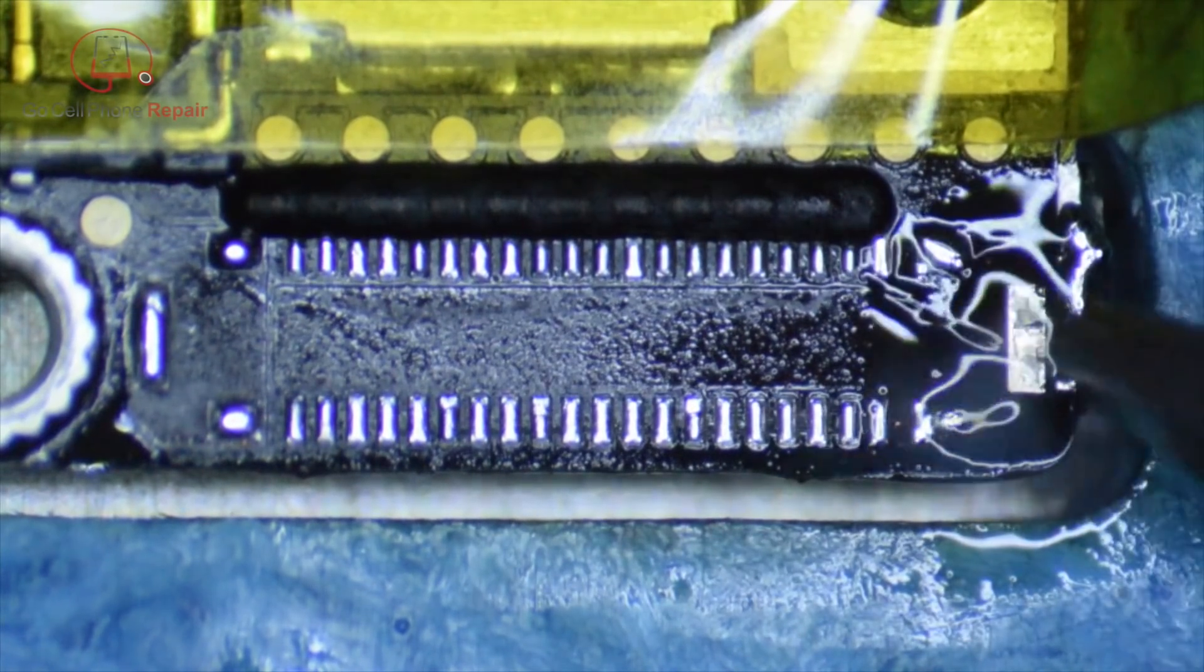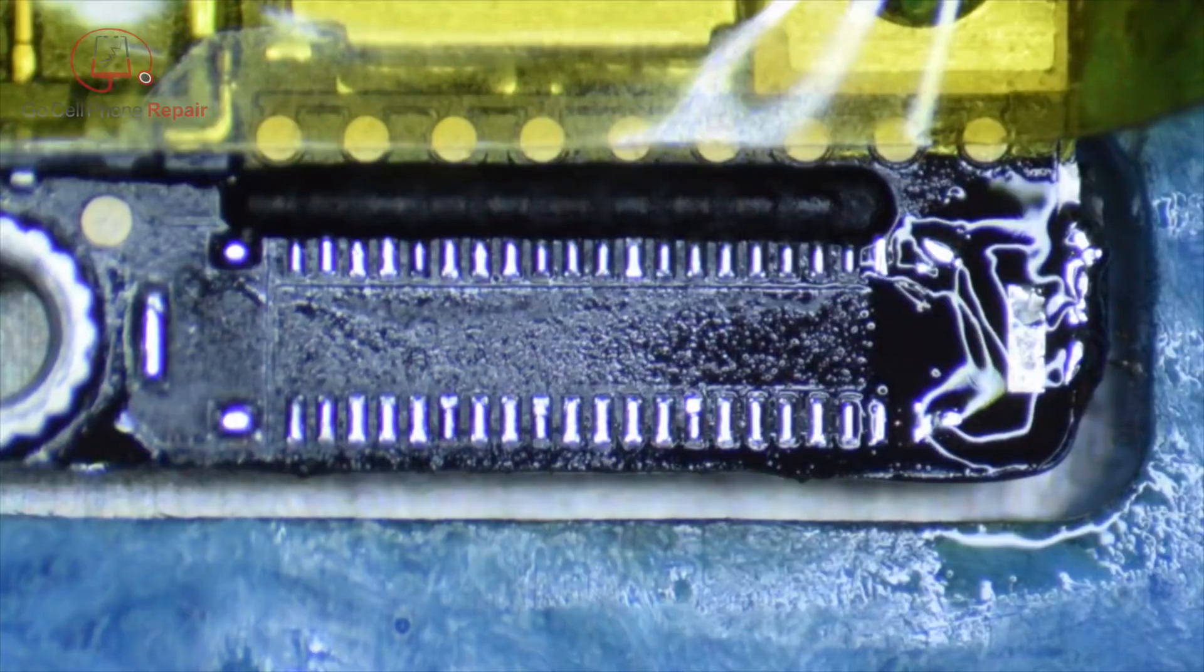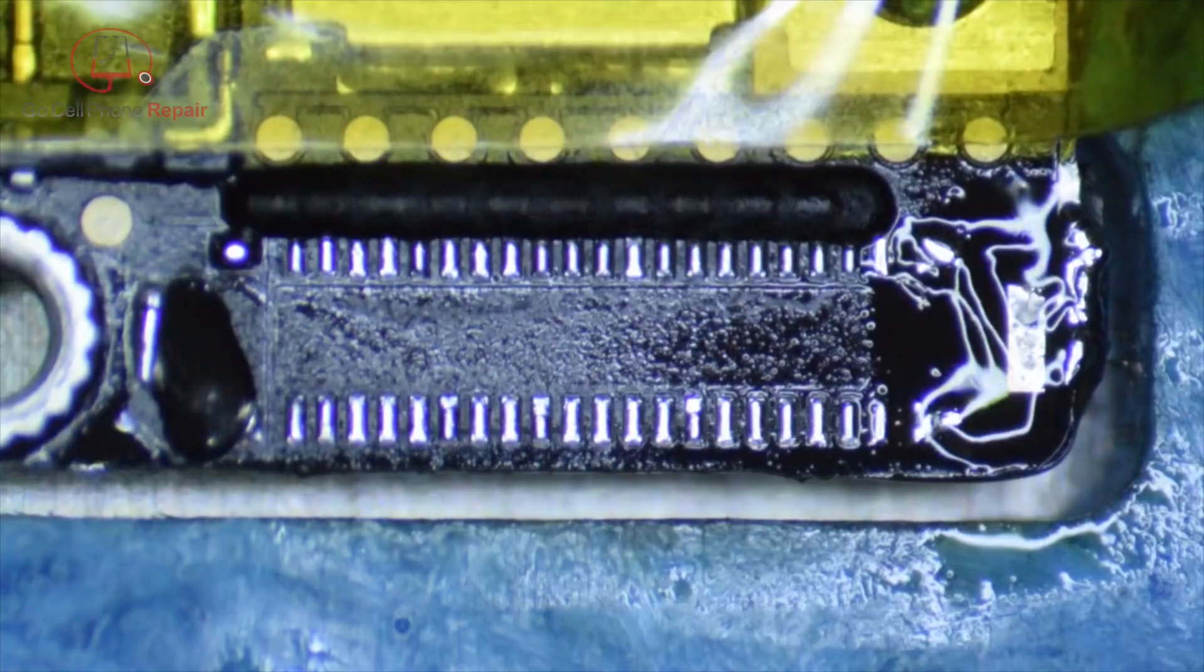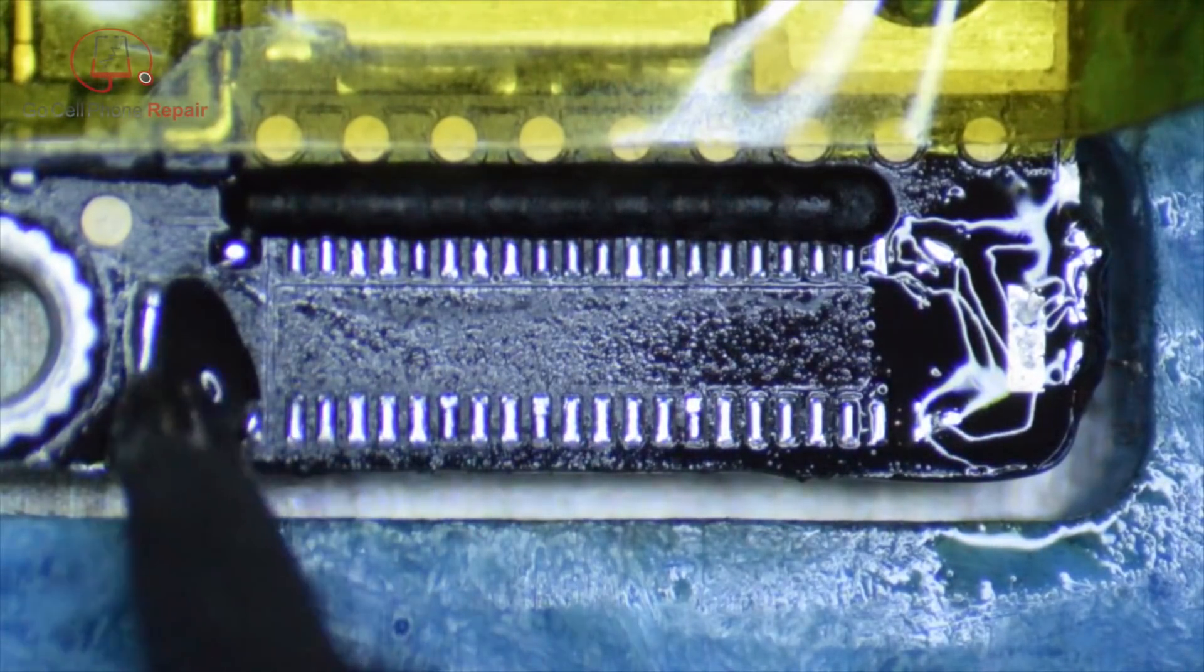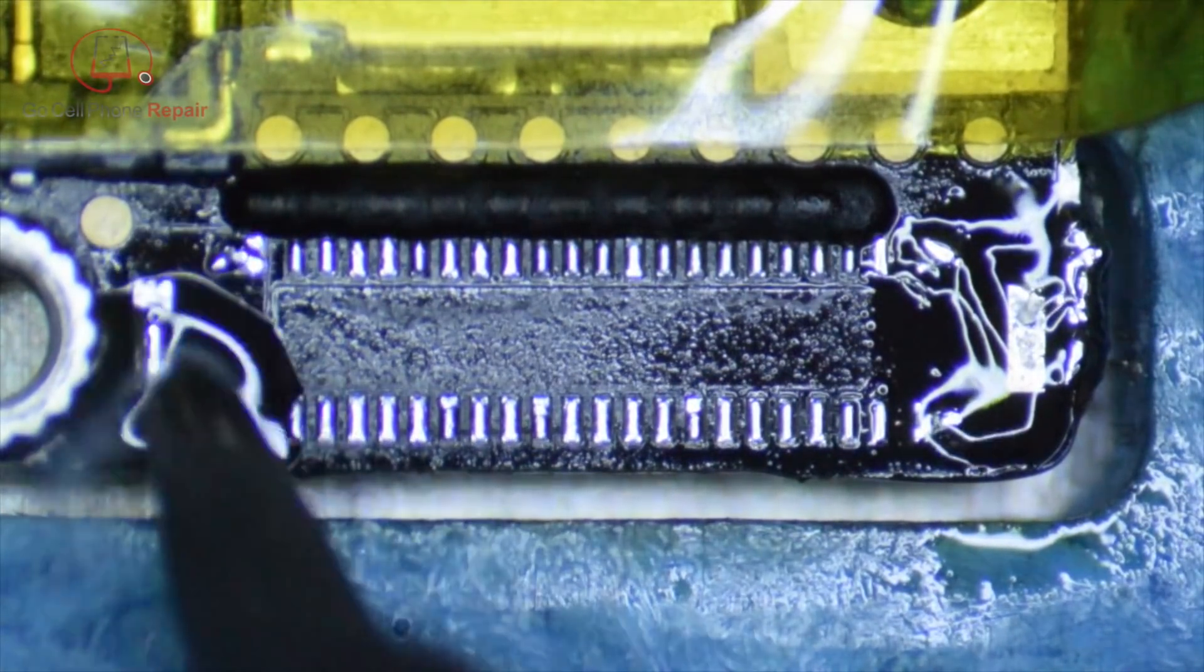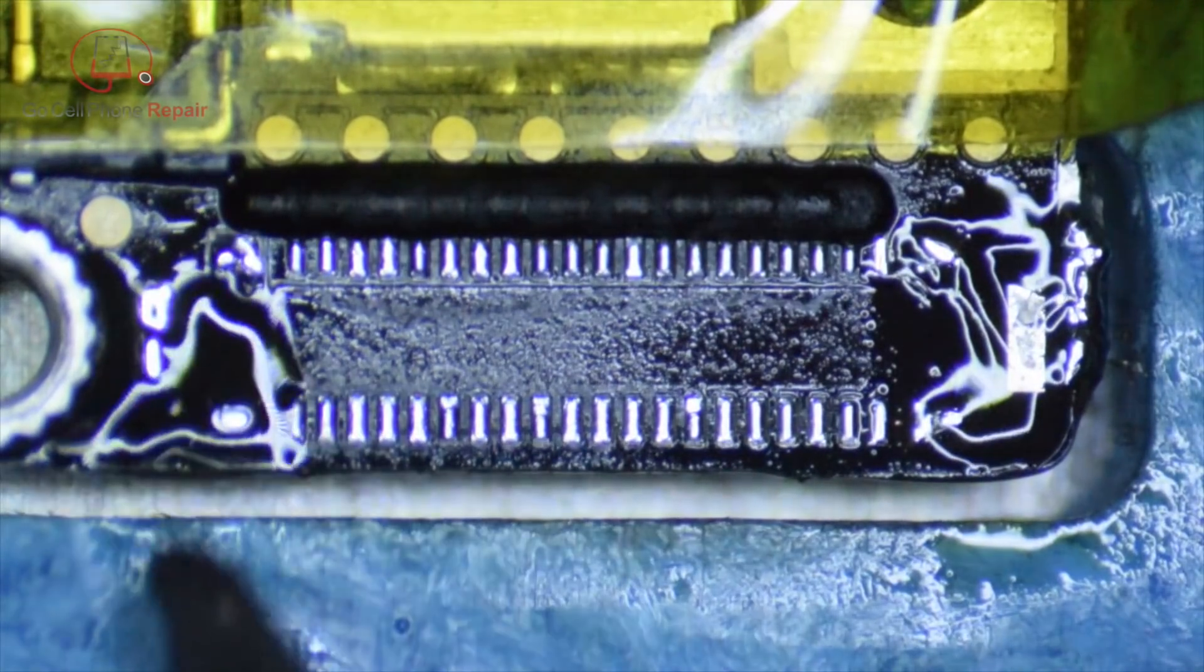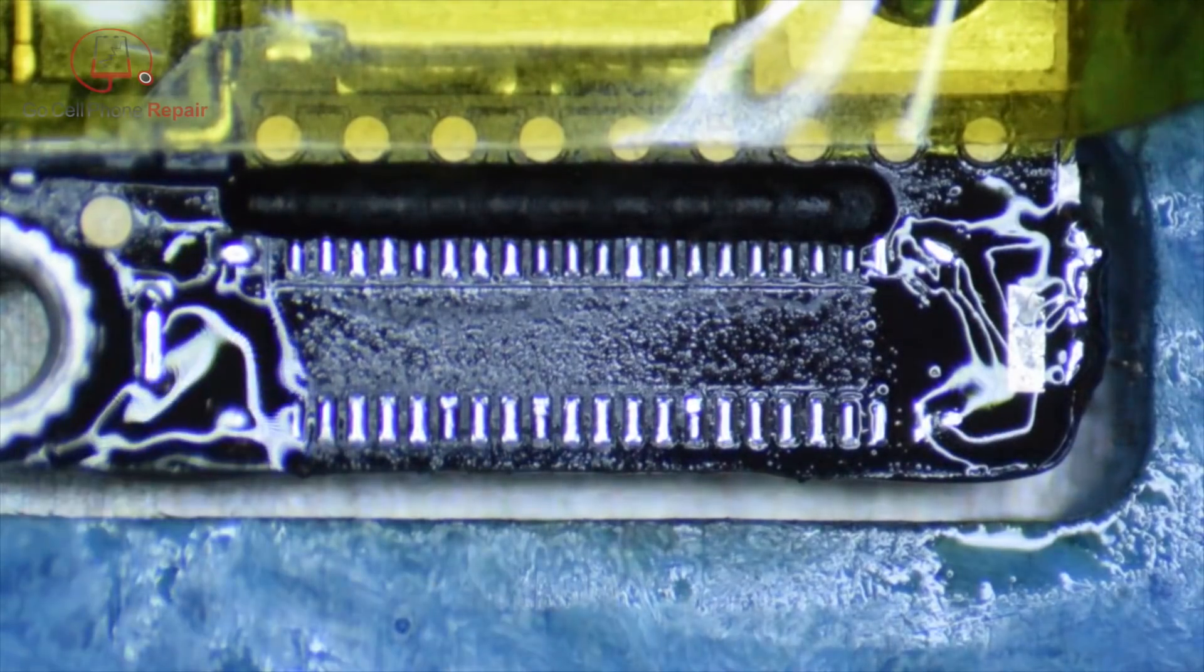When we go over this with the hot air, it's going to kind of even things out. We just want to make sure that we don't have an excess. We can always add more on here, but having big clumps of solder can cause some problems. I'm just kind of dragging that excess away at this point.